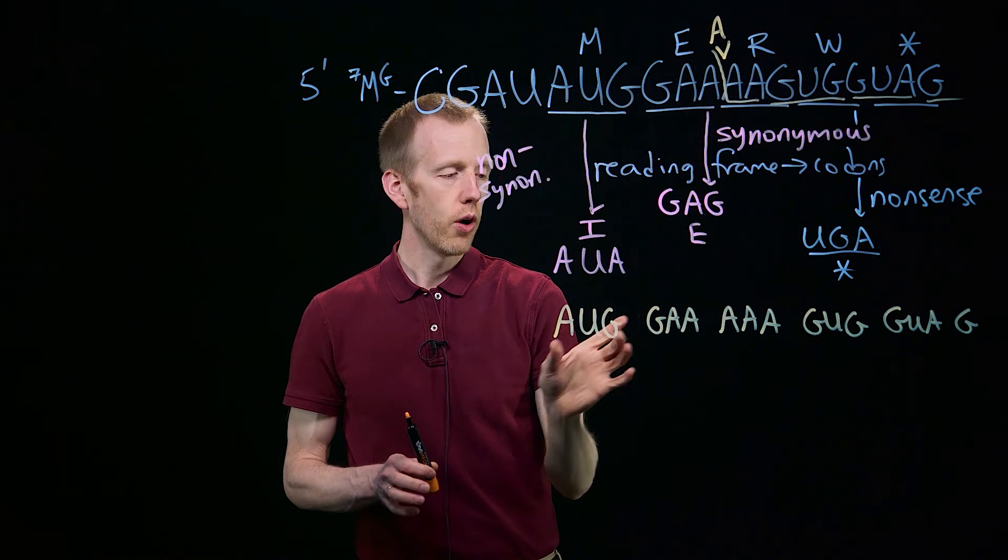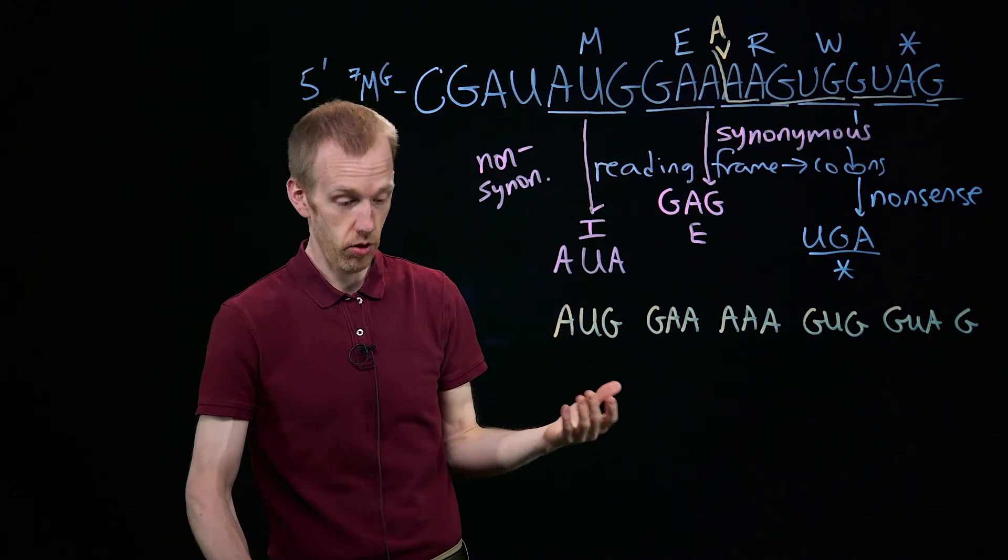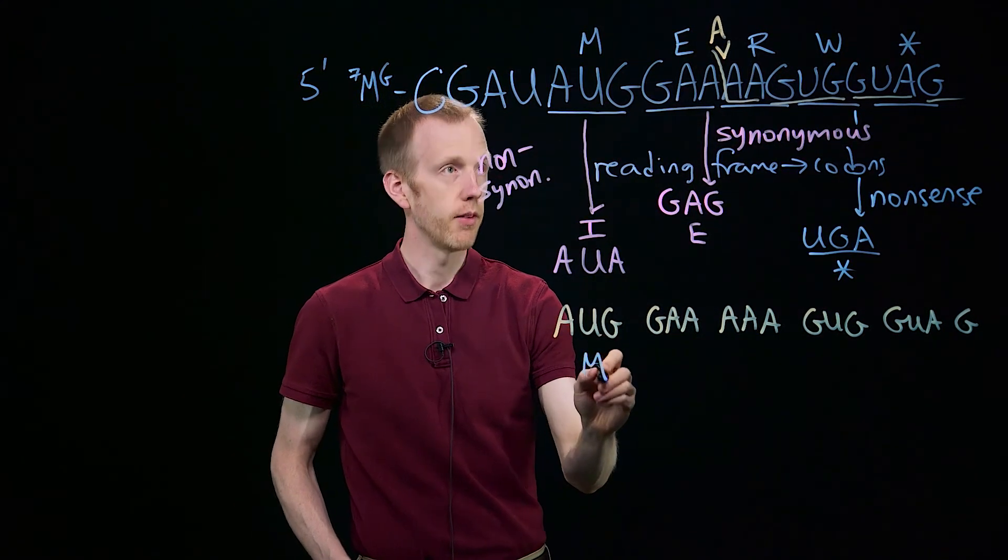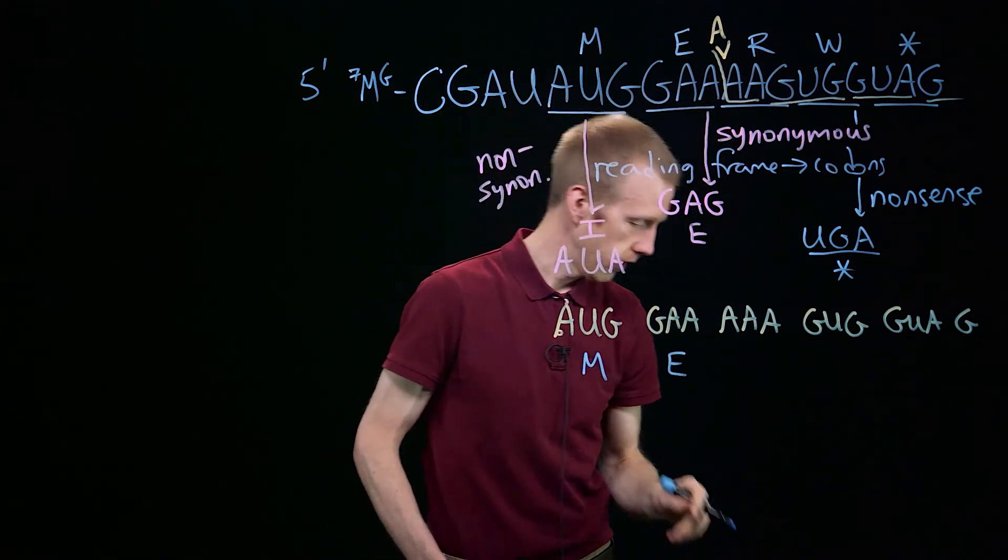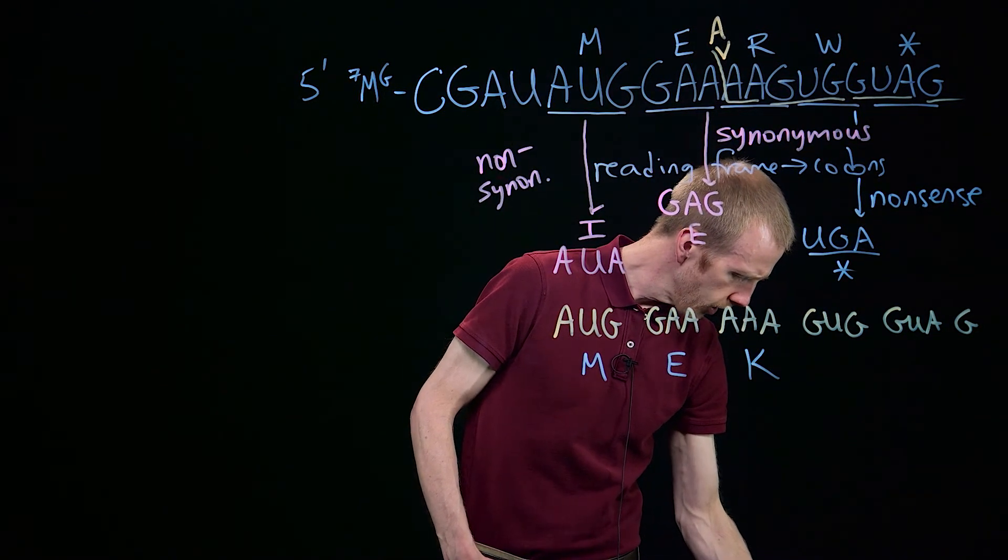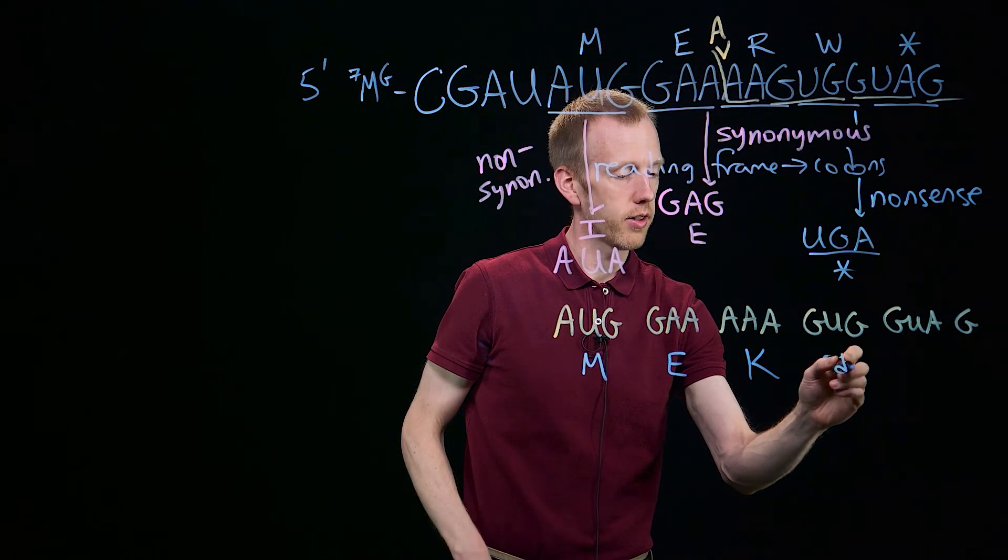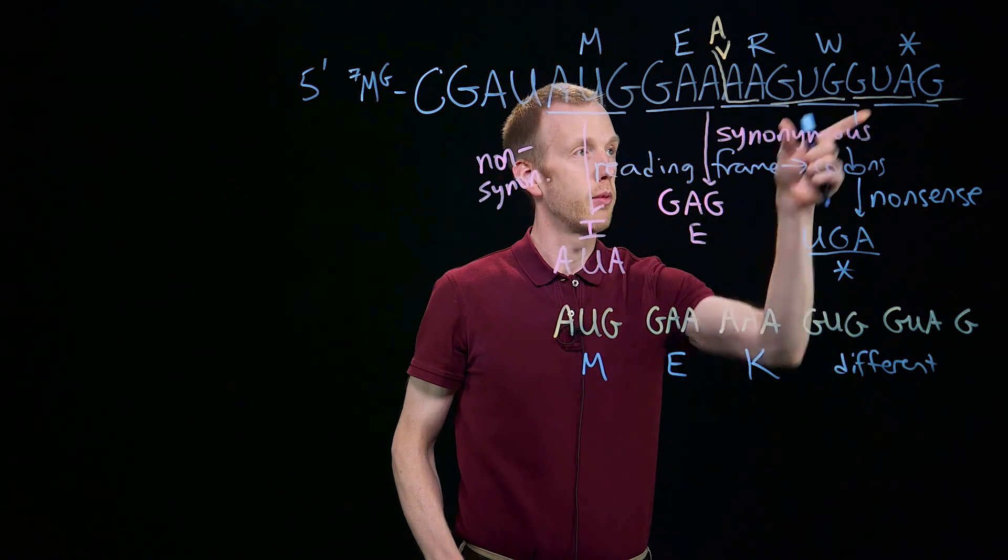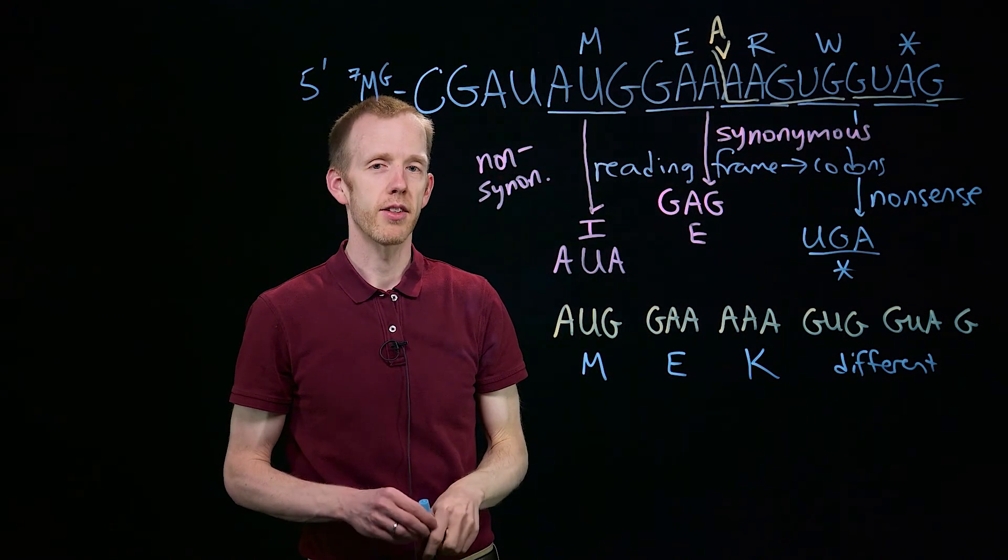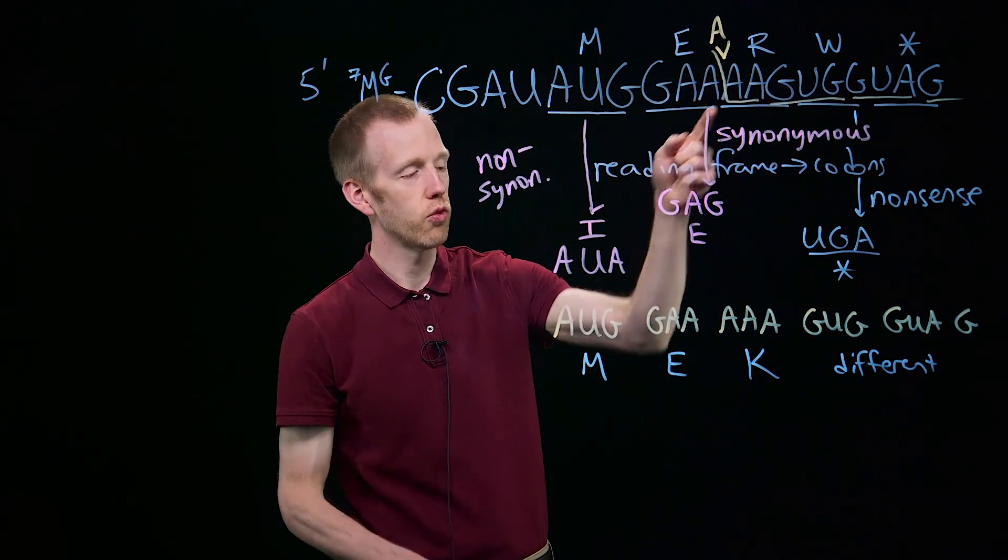Note two things. First, we don't have a stop codon yet, meaning the ribosome would keep sliding down this messenger RNA molecule, translating for potentially a very long time. The other thing that's happened is, let's see what's happened to the amino acid sequence. We still have a methionine, we still have GAA, which encodes glutamic acid. Now we have AAA, which is lysine, GUG, GUA, and so forth. So these are different amino acids than the amino acids that were up here. Look those up on a codon table, and bring them to class next time, so we can discuss what is the actual protein that's encoded by this new transcript that's got this frameshifting mutation.